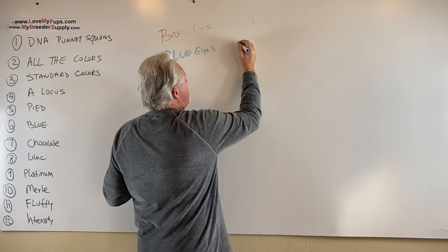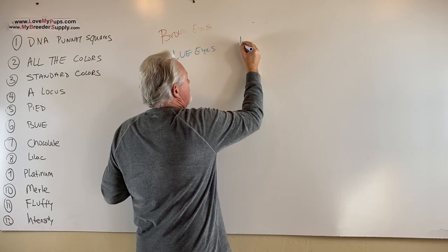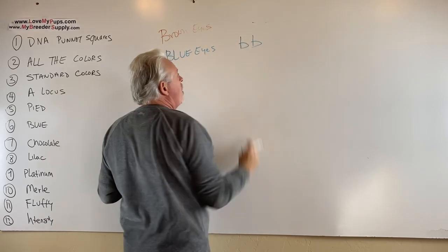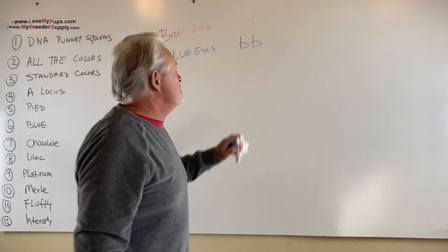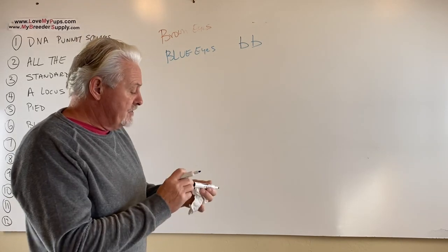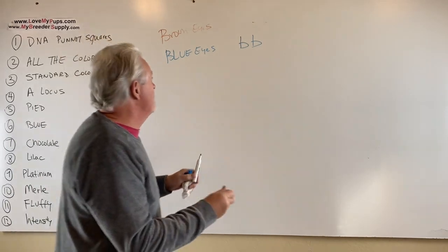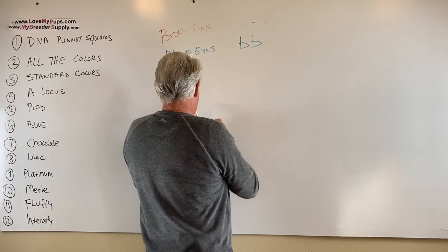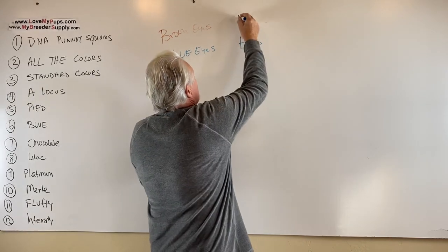The blue eye gene, we're going to call that b for blue, is a double recessive. You have to have two copies of the recessive blue gene to end up with blue eyes. If you don't have that, then you end up with brown eyes. And that ends up being that.